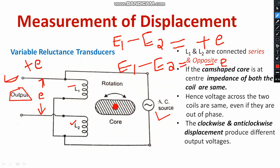This allows you to identify the displacement. The displacement is directly proportional to the output voltage. This is known as a variable reluctance transducer. You can measure displacement in both clockwise and anticlockwise directions.